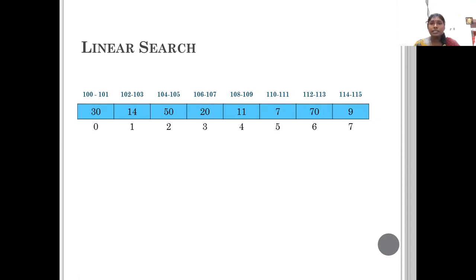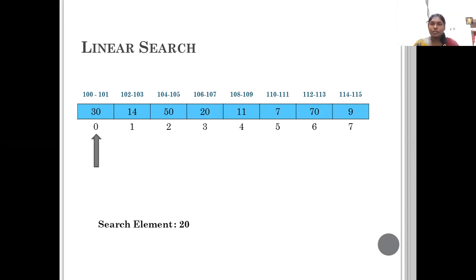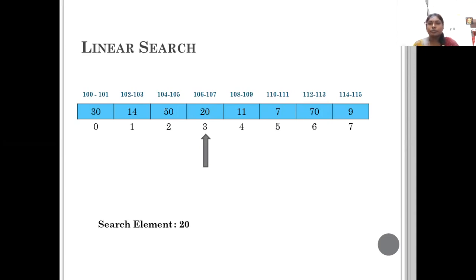So this is basic linear search. The number of elements in the array is 8. Now I have to check whether the element I am searching for is present. The search element I am going to search is 20. I'm going to check whether 20 is present in the array or not. If it is not present, I return not found. If it is present, I return the position. Linear search starts from the first element, at index 0, and checks whether the element is equal to the element you are searching. If found, it returns the position — 20 is found in the fourth position.